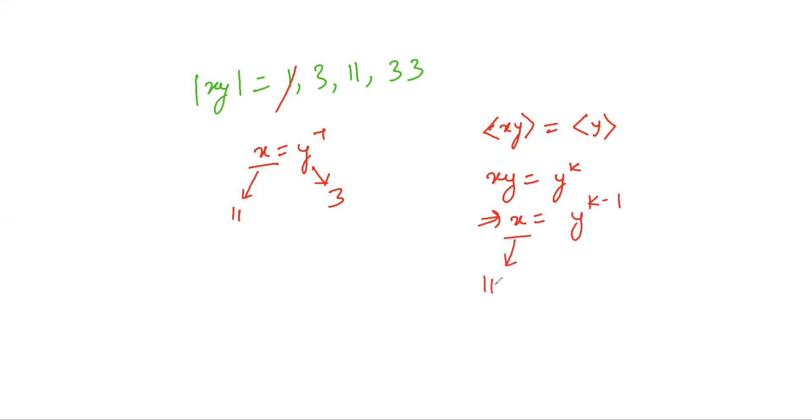order of x is 11 and order of y^(k-1) is either 1 or 3 since y^(k-1) belongs to <y>, which is not true. Hence the order cannot be 3.